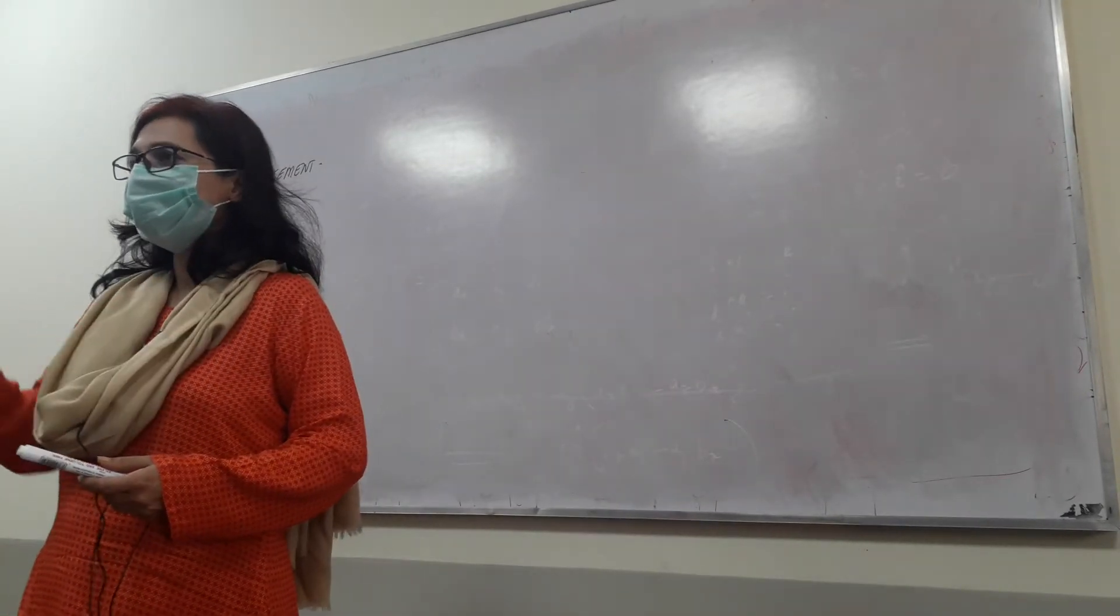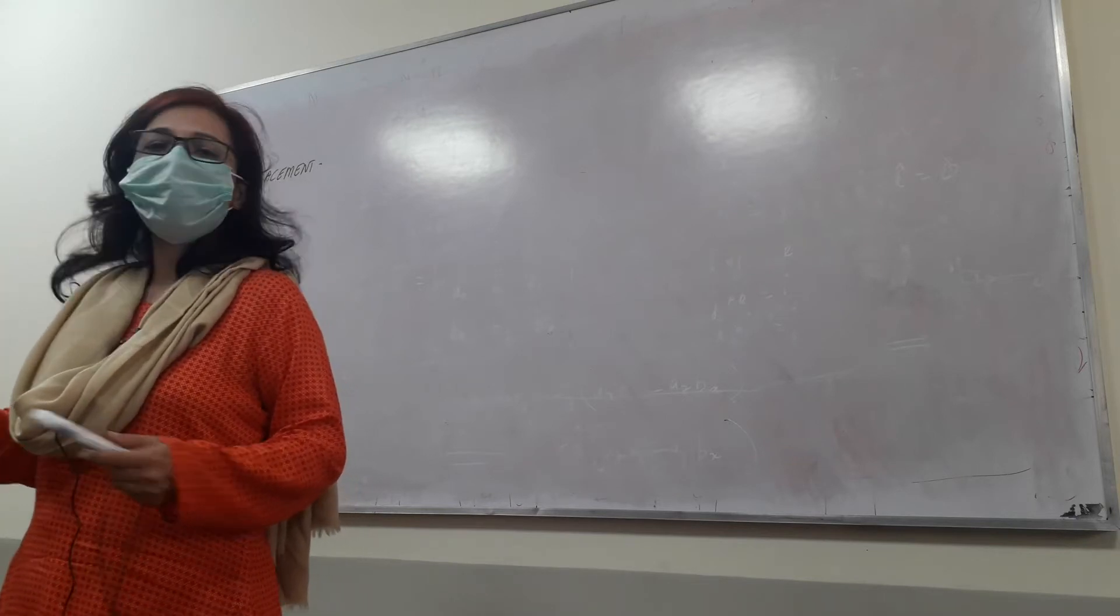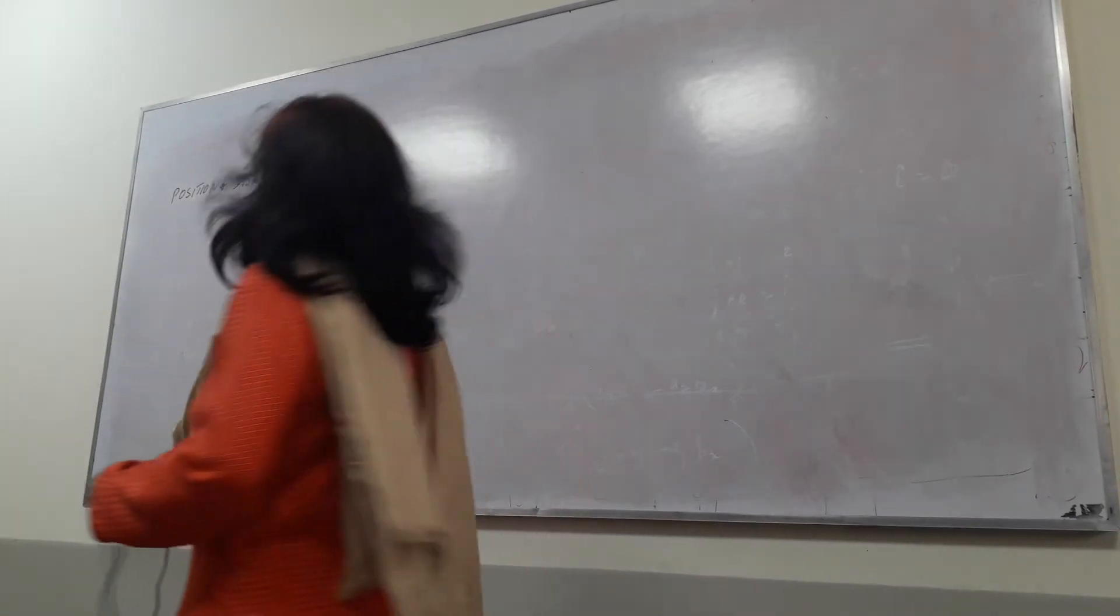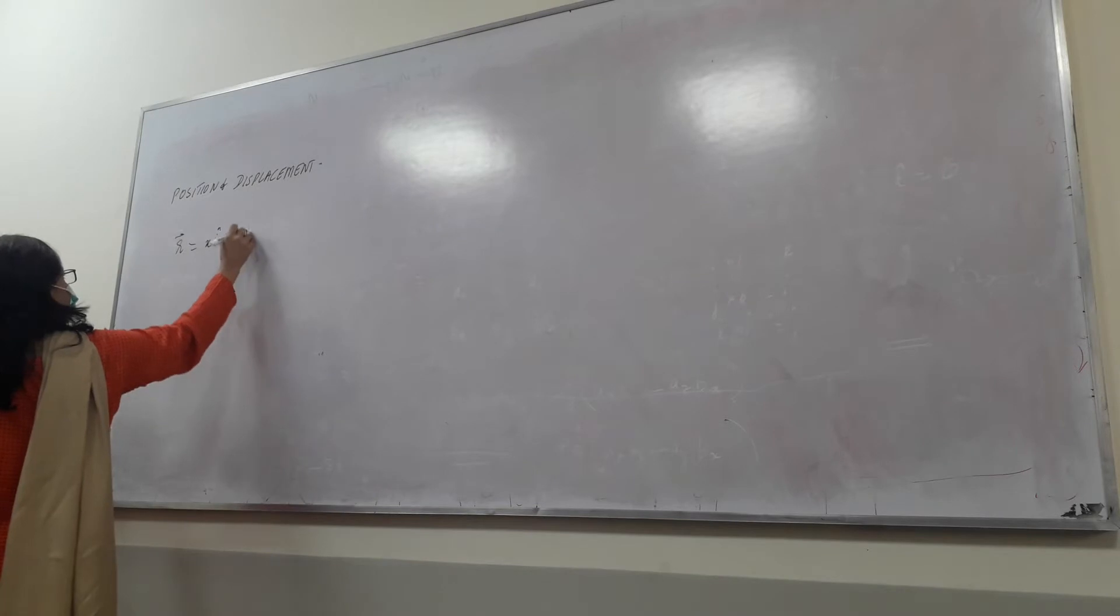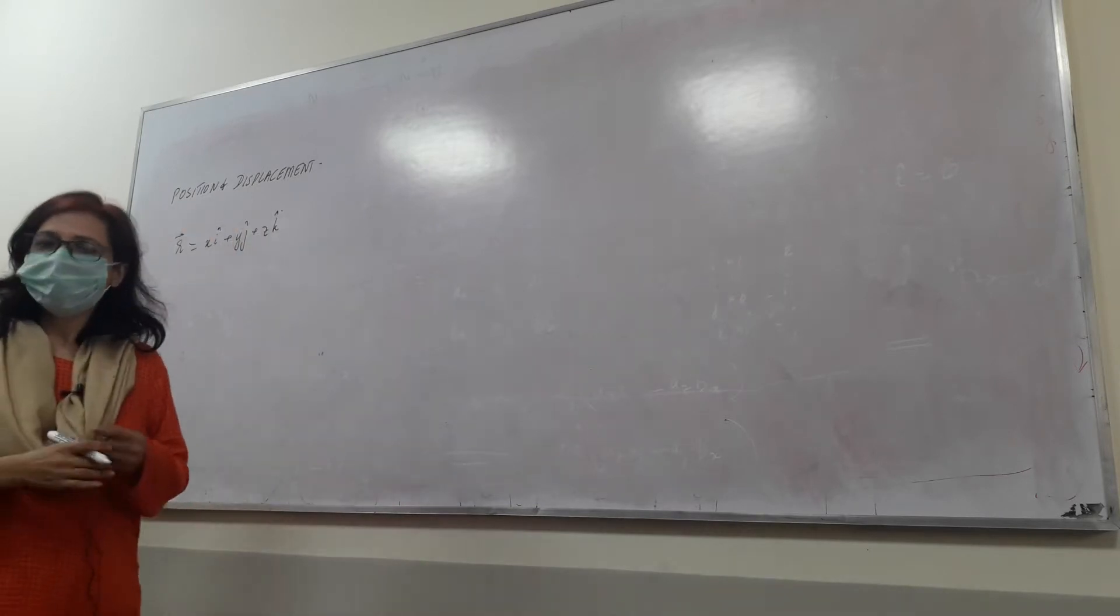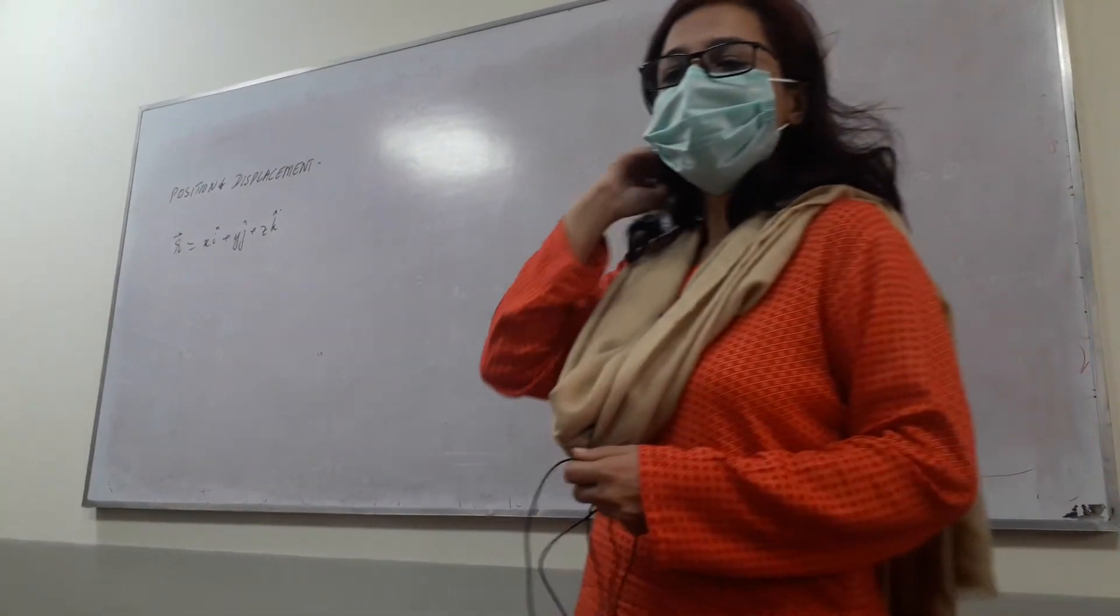We were just writing it without the vector component notation. Now we have vectors, for example, if r is a vector it can be written along the x axis, along the y axis and along the z axis. So this is what we have been doing so far.